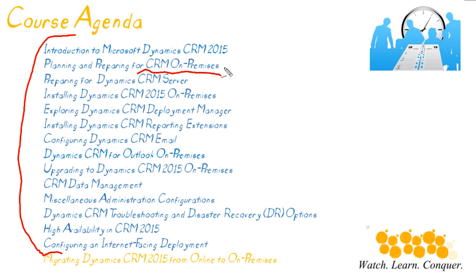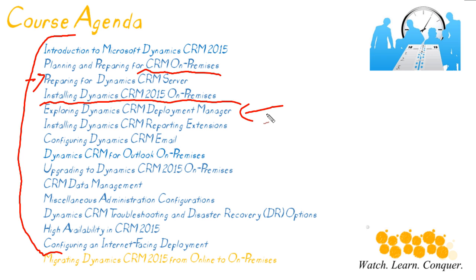This is prior to the installation — what you need to have in the background, what components are involved with CRM — and then we'll get prepped for the installation. We're going to walk through the installation of CRM on-prem and then explore our primary tool used to manage CRM, which is the Deployment Manager. We'll then do some post-installation configurations by installing reporting extensions, CRM email, and we'll take a peek at how to set up CRM for Outlook on-premises. Users can actually access the content using Outlook, which is pretty slick.